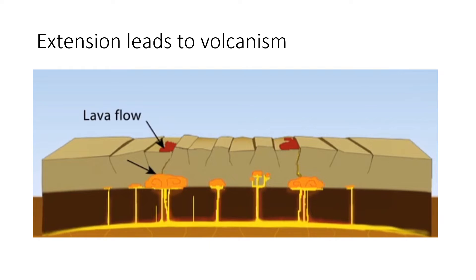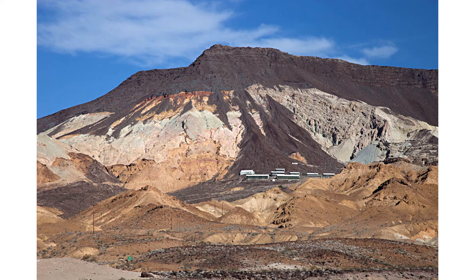As the crust is extended, it thins and allows the upwelling of magma. As a result, basin and range is also associated with volcanism. Rocks of many colors abound in Death Valley, but if you see black rocks, you're almost always looking at basalt, either in the form of lava flows or intruding into the older sediments as dikes.